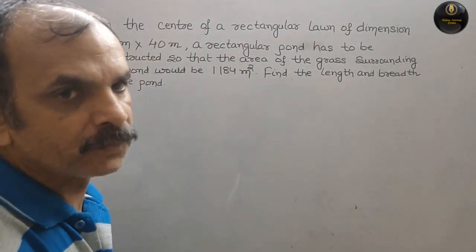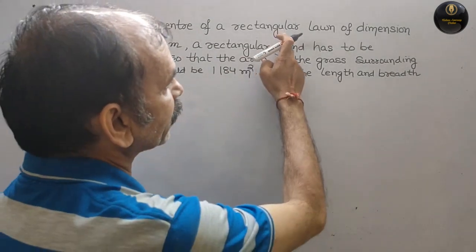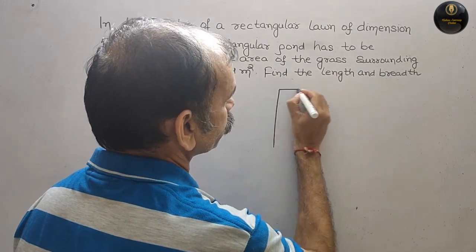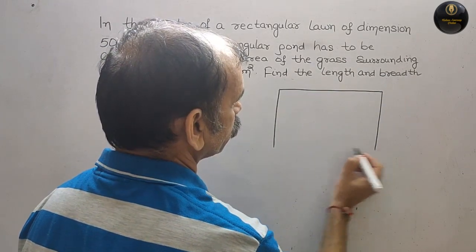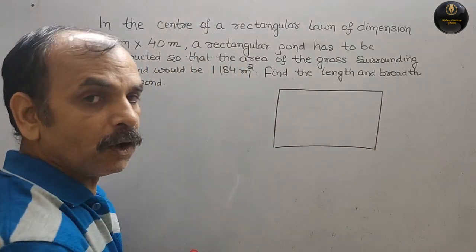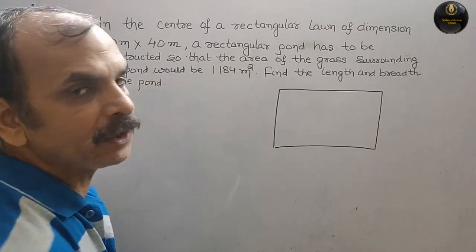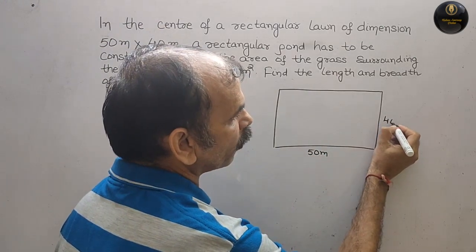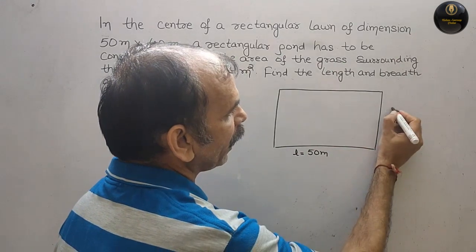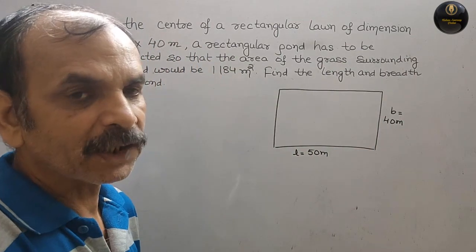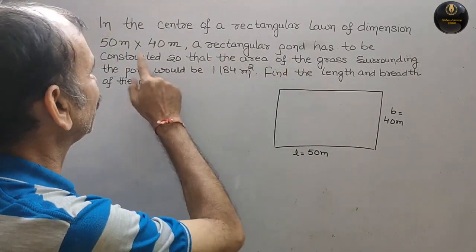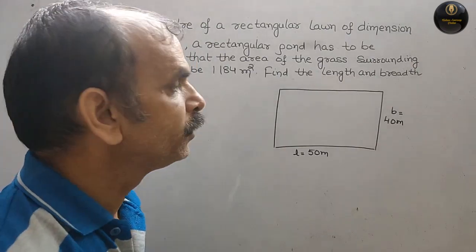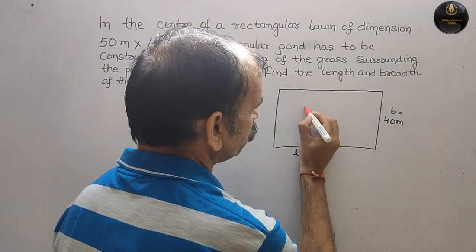We have a rectangular lawn. The dimension is 50m x 40m, so this is 50m and this is 40m. Length is 50m and breadth is 40m. A rectangular pond has to be constructed in the center. Suppose this is your rectangular pond inside the lawn.